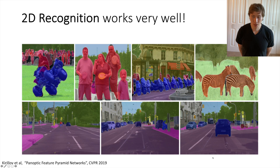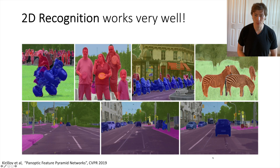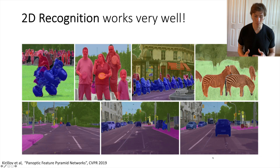Computer vision in the last few years has made amazing progress on 2D recognition. We can now build computer vision systems that input images and make very high quality predictions in the 2D image plane. Here are some qualitative results from Facebook colleagues on 2D recognition using panoptic segmentation with panoptic feature pyramid networks. Our systems are now able to tell a lot about what's going on in these 2D images.